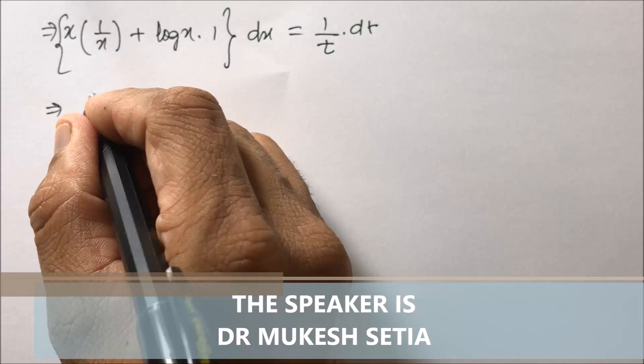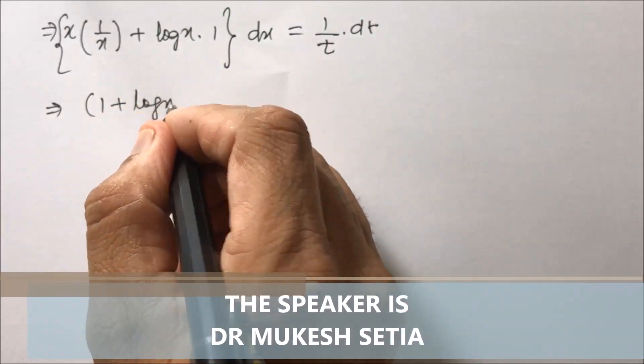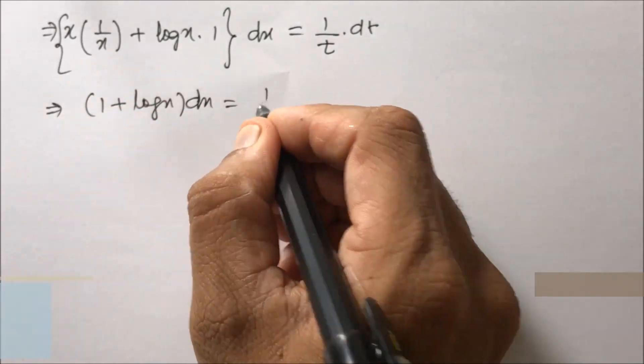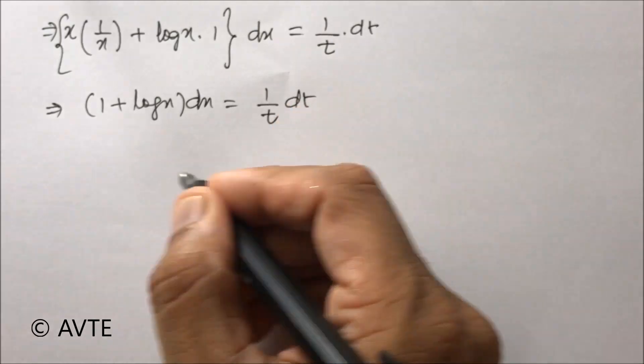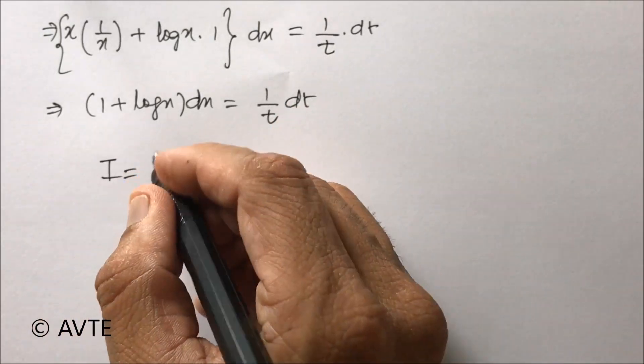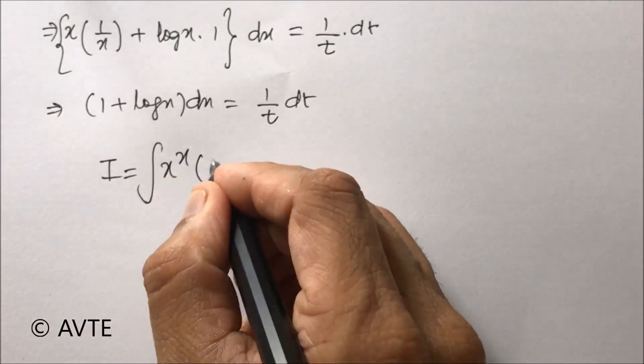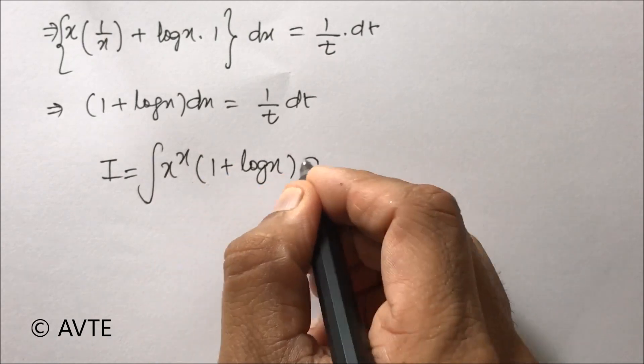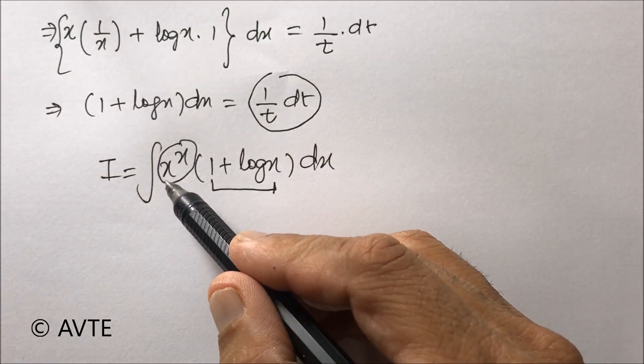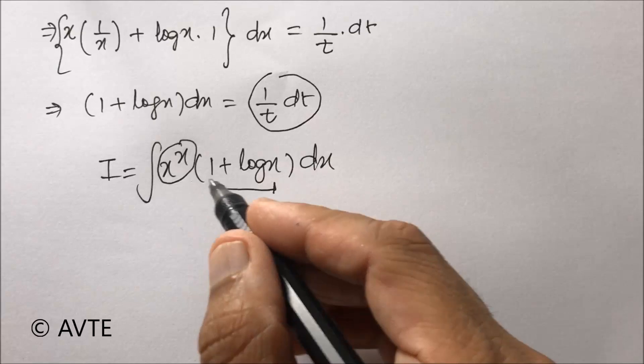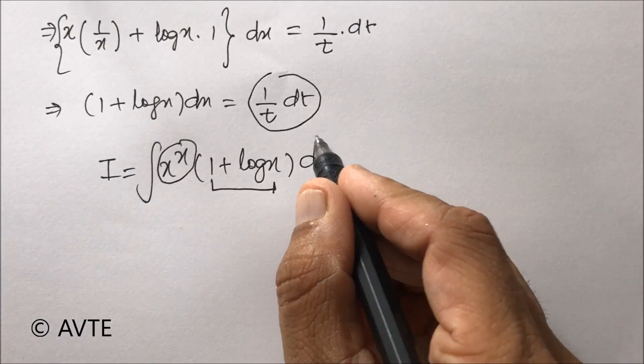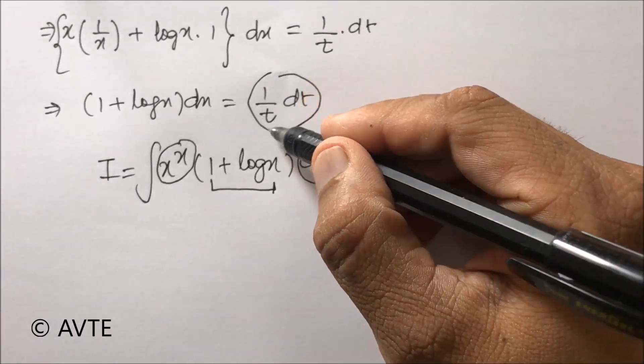You can see that (1 + log x)dx is now turning to 1/t dt. If you remember the question, we took x^x as t, and this (1 + log x)dx will turn to 1/t dt.